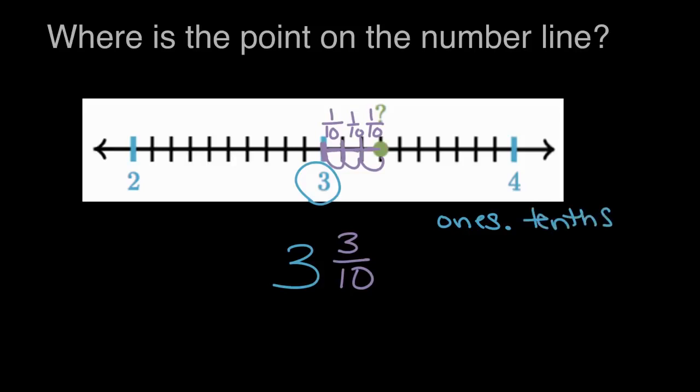So for the ones, there's three ones. And how many tenths did we see here? There were three tenths. So either way, we can say three and three tenths. Our point is 3.3 on the number line.